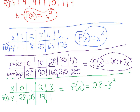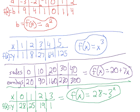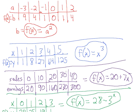We can prove this: 28 minus 3 to the 1 gives 25. 28 minus 3 squared gives 19. 28 minus 3 cubed, which is 27, gives 1. So the function is f of x equals 28 minus 3 to the x. We need to identify patterns in order to write a function given a table of values. We'll do more of writing functions in the next video.